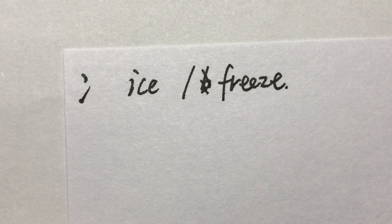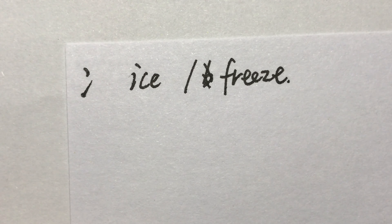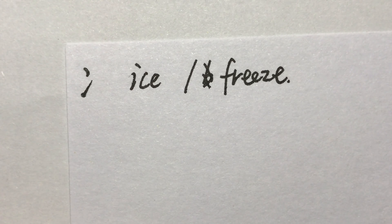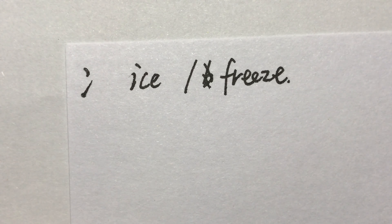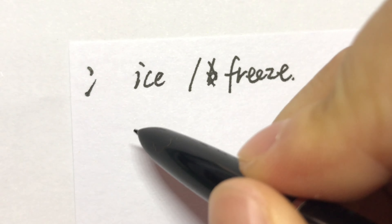Let's take some examples. 'The ice started to crack.' 冰开始裂了. 冰 means ice.